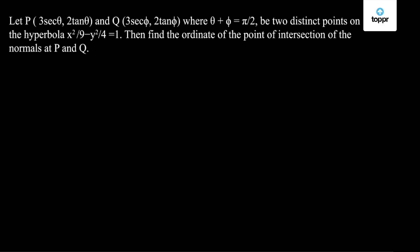The problem is: let P(3secθ, 2tanθ) and Q(3secφ, 2tanφ) where θ + φ = π/2 be two distinct points on the hyperbola x²/9 - y²/4 = 1. Then find the ordinate of the point of intersection of the normals at P and Q.